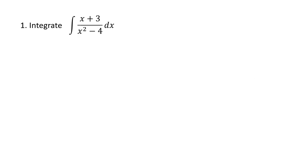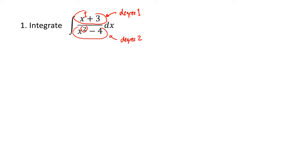When we have an integral where we have a polynomial divided by a polynomial, the first thing we want to look at is the degree of the top and the bottom. The top polynomial is linear, which means it has degree 1 — the highest power of x on top is x to the first power. On the bottom, I have degree 2; the highest power of x is x squared.